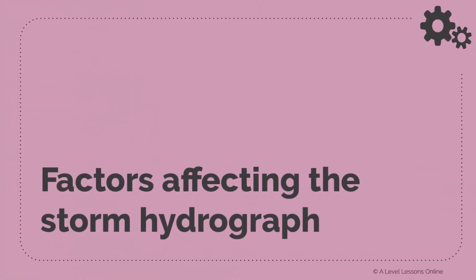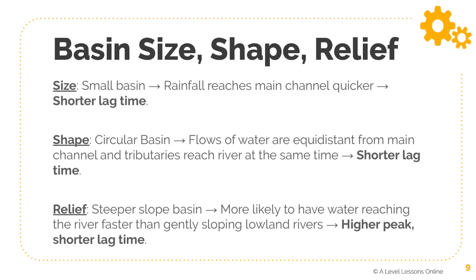Now let's look at the factors that actually affect a storm hydrograph — what causes the rising limb to be steep or gentle, and whether lag time can be shorter or longer. We look at both natural and human-related factors. Starting with basin size: a smaller basin means discharge will peak much faster and rainfall will enter the river and overflow faster, leading to a shorter lag time because rainfall reaches the main channel quicker, and the river will reach peak discharge extremely quickly.